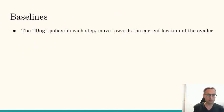Before I tell you how we solved it, let's talk about some baselines. One baseline is called the dog policy. In the dog policy, the pursuer, in every iteration, sees where the evader is currently at and moves one step towards that location. That may seem sensible, but in some cases it's very stupid.